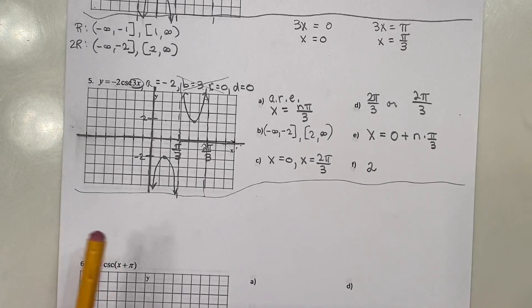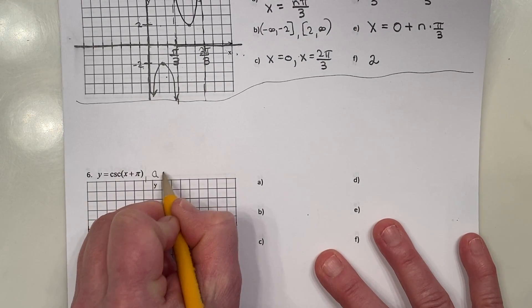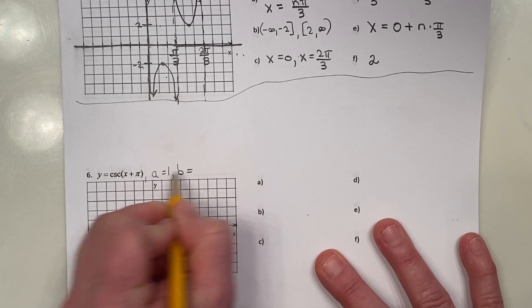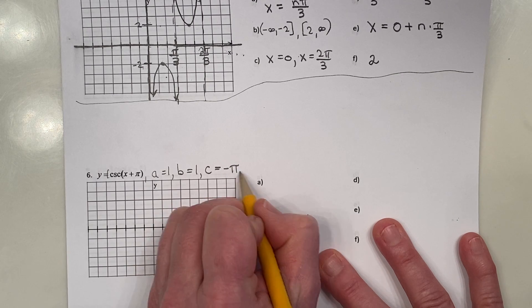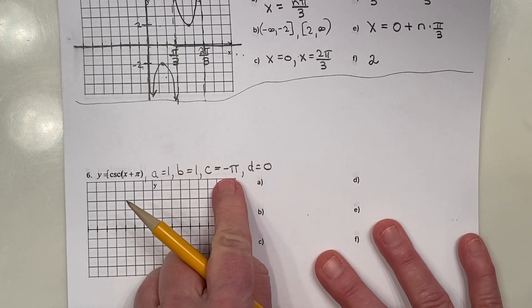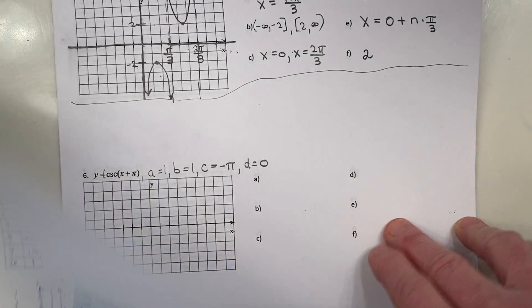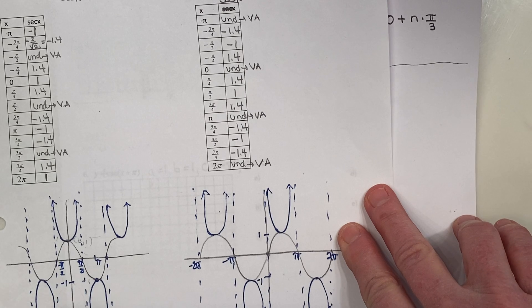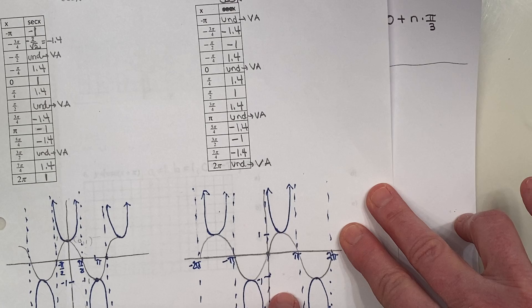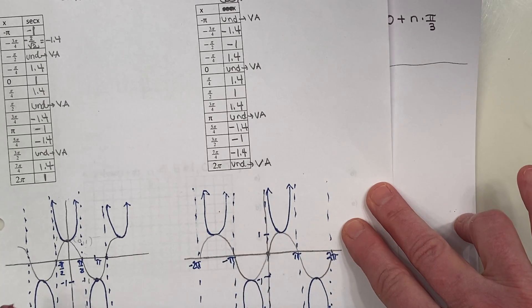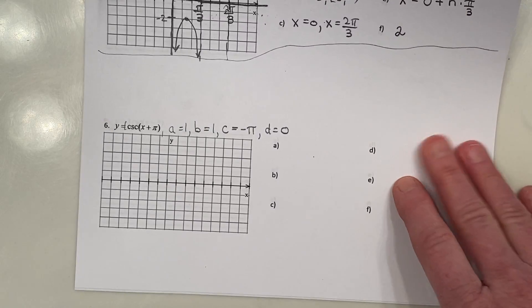For problem 6, state A through D. B is also 1, so C must be negative π. And there's no D. So it looks like the only thing we're doing is actually shifting the cosecant graph left π. That should be easy. If I shift this graph left π, then this graph will come over here and this graph down here will be here. And it looks like all the other information will be the same as the parent function if all I'm doing is moving it left.